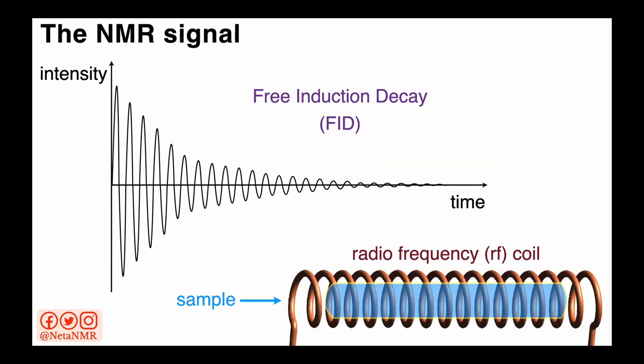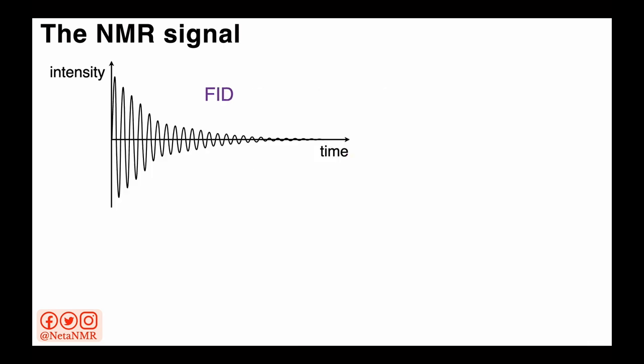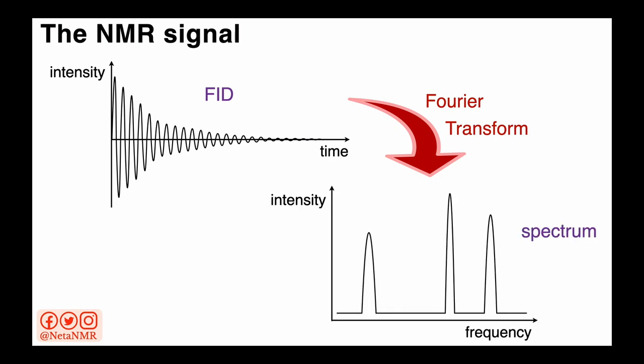This spin transition is then detected and as the magnetization returns to equilibrium, the signal is detected by the coil and it is recorded as a free induction decay. This is the NMR signal as a function of time. And if we apply to this signal a mathematical transformation called a Fourier transform, we can transform the signal from the time domain to the frequency domain. Here we have peaks that appear at different frequencies and this is called an NMR spectrum.